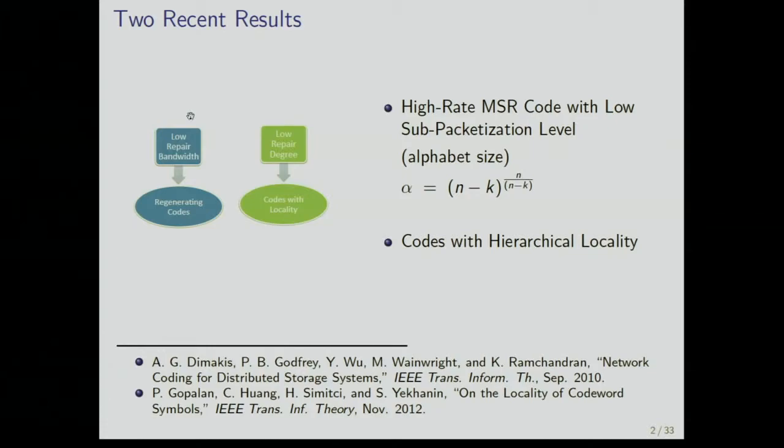The recent results have to do, first, the first result has to do with regenerating codes, and the second one has to do with codes with locality. In regenerating codes, there is a new construction for an MSR code, which is high rate, and I guess more importantly, because there have been other constructions, it has a low alphabet size, and I'll say more about it later. The other one relates to codes with locality. I guess generalizations are always welcome in practice, so this is another generalization which I think could be useful in practice.